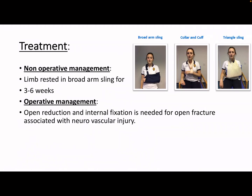This fracture can be treated either non-operatively or operatively. If it is a closed fracture - not much damage done and not an open fracture - then the limb is going to be rested in a broad arm sling for three to six weeks. There is also a collar and cuff, and a triangle sling - these are different sorts of slings - but we prefer the broad arm sling here to make sure the arm is resting properly.